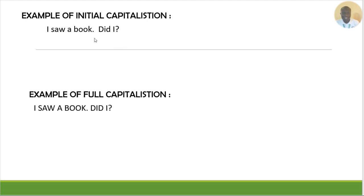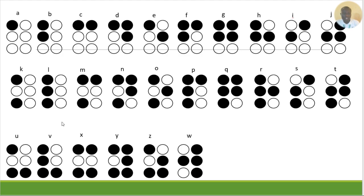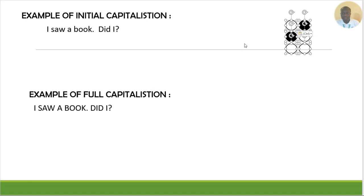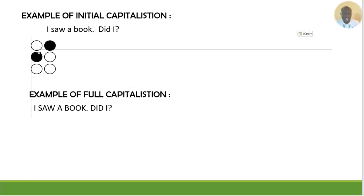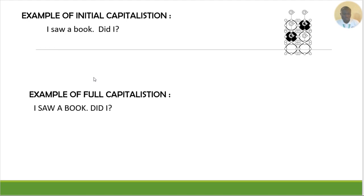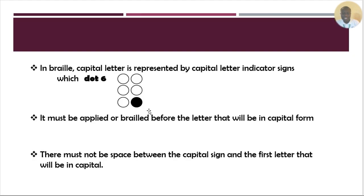Let's look at this example of initial capitalization: 'I saw a book. Did I?' If you look at this example carefully, 'I' is in capital form, 'D' is in capital form, and the next 'I' is also in capital form. People often make the mistake of just brailling the letter directly. The first thing you are supposed to do is bring in the capital sign.